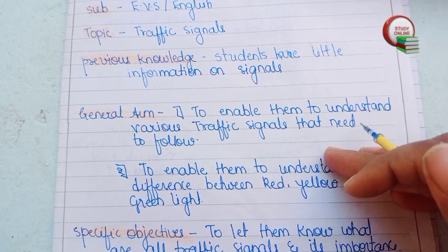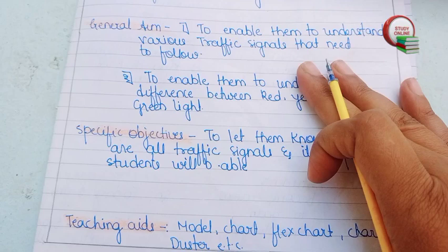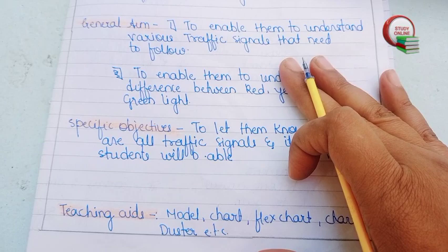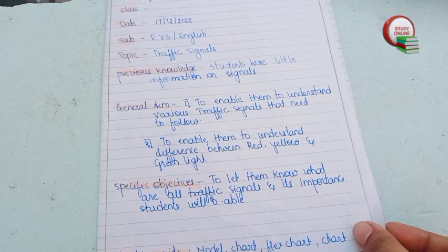Here you can see the previous knowledge section — students have a little bit of knowledge about traffic signals; they are not fully aware but they have some general knowledge. The general objective is to enable them to understand traffic signals and the various signals like red, yellow, and green light, and to understand the differences between them. The specific objective is to let them know what all traffic signals are and their importance.